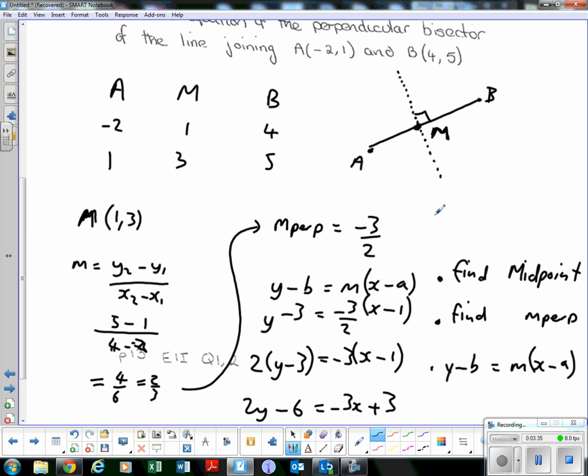And this is sometimes where pupils go wrong. They just randomly guess what point they're going to put in. I want the equation of this line. I want a point on this line. Is A on the line here? No. Is B on the line here? No. Is M on the line? Yes. That's why we worked it out.